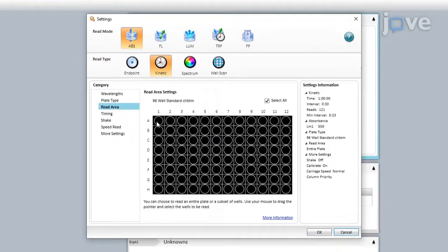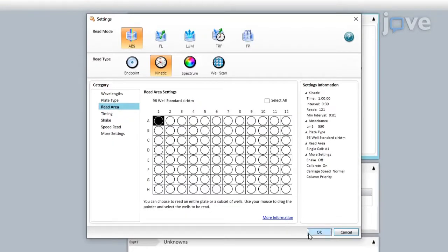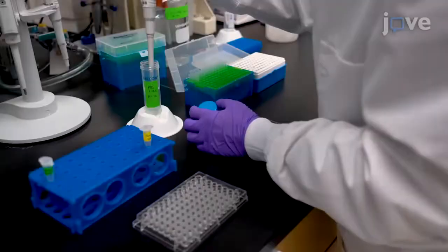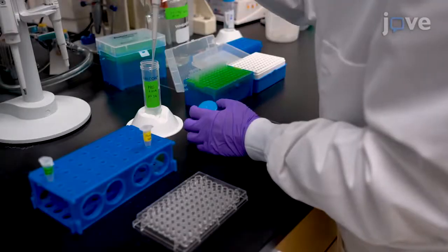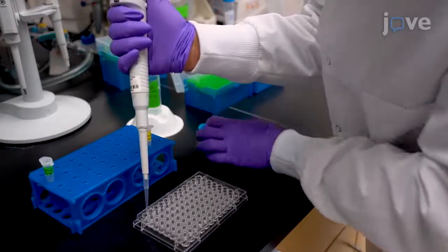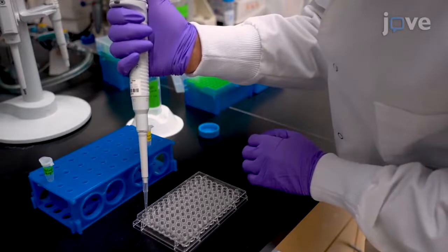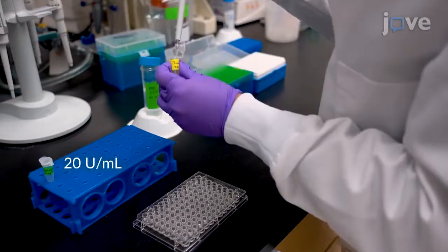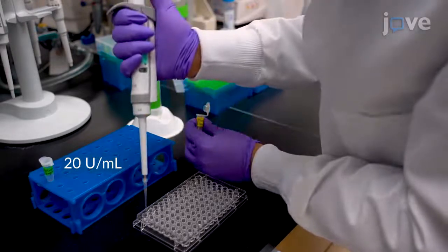Select the wells of interest by highlighting them. Pipette 140 microliters of PBS into one well of a UV transparent 96-well plate. Then add 10 microliters of thrombin and mix.